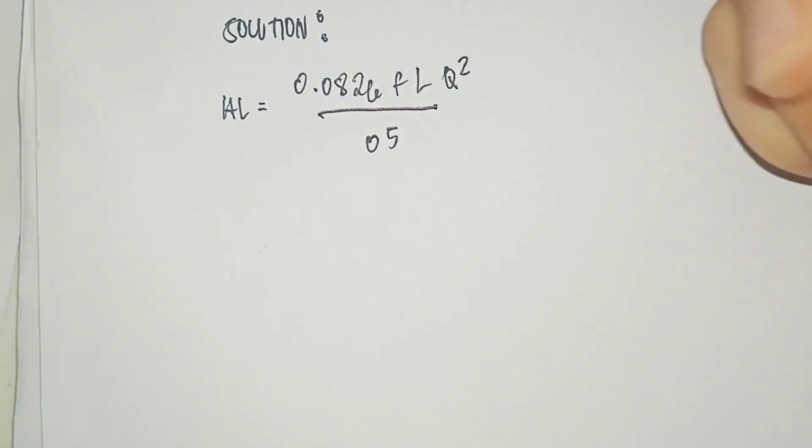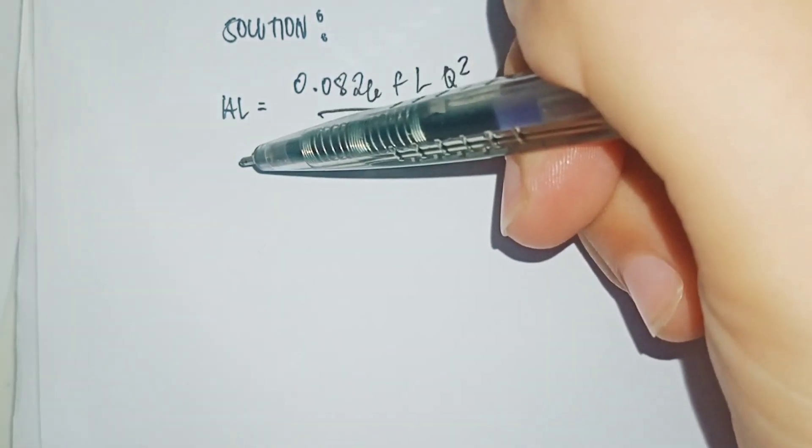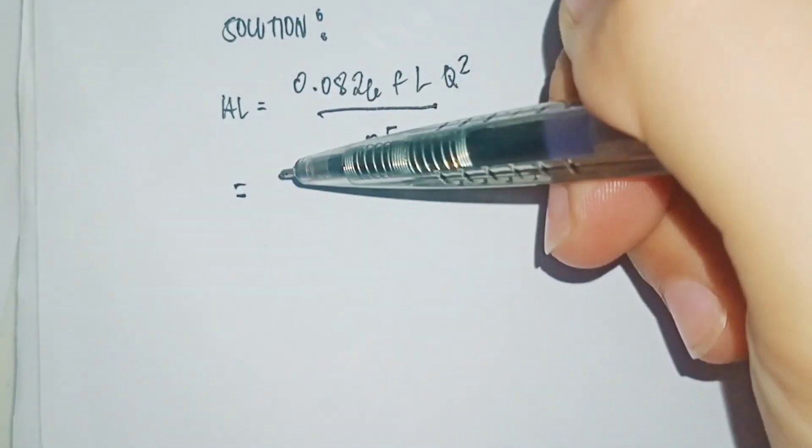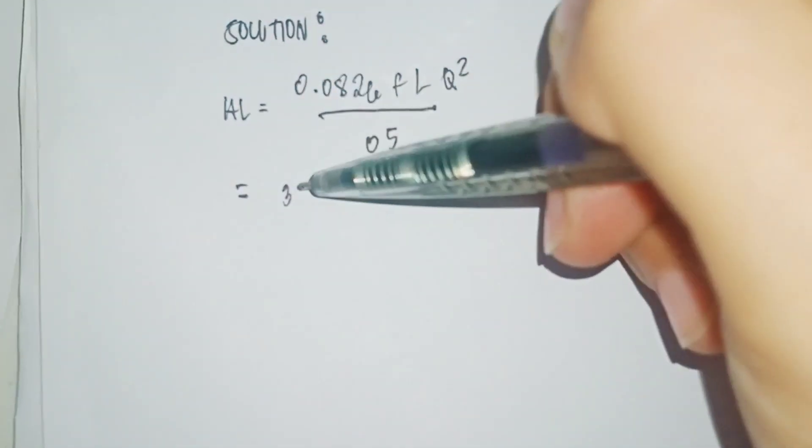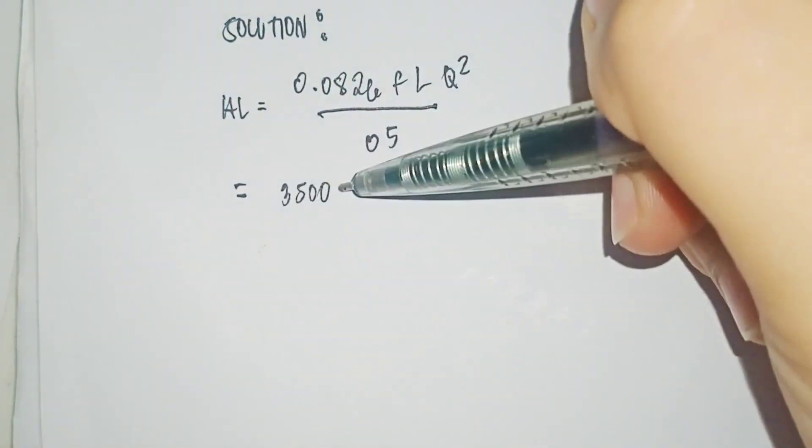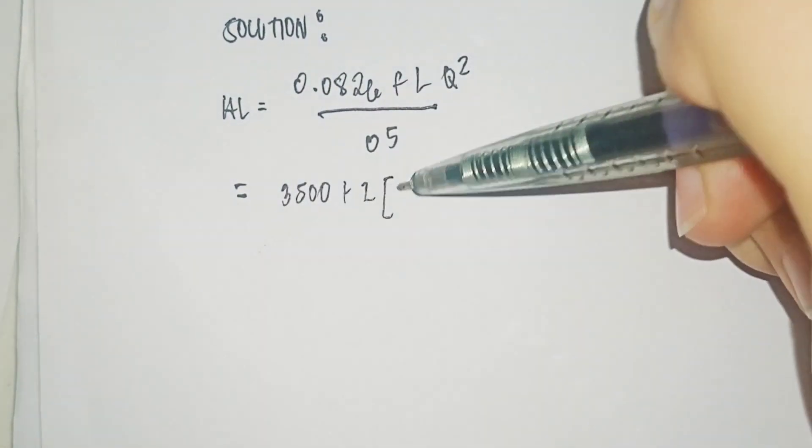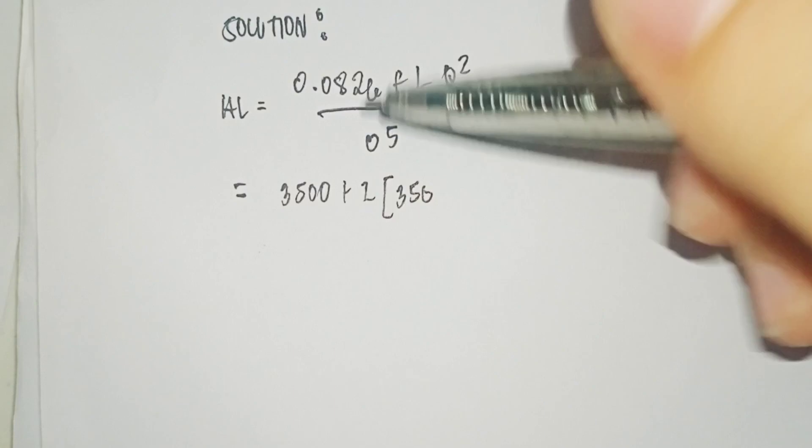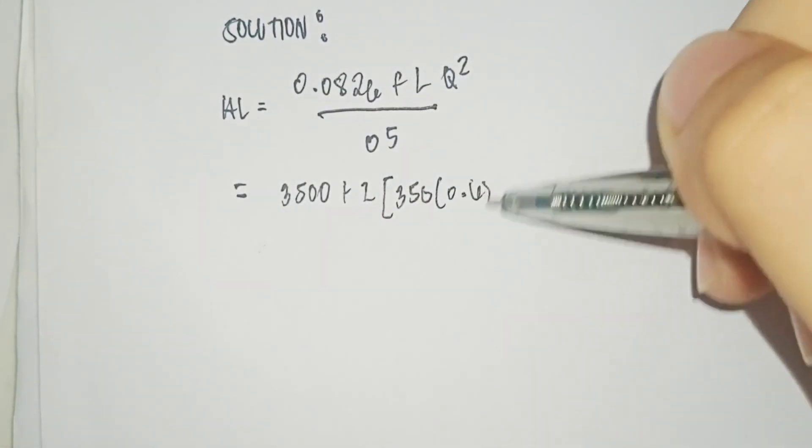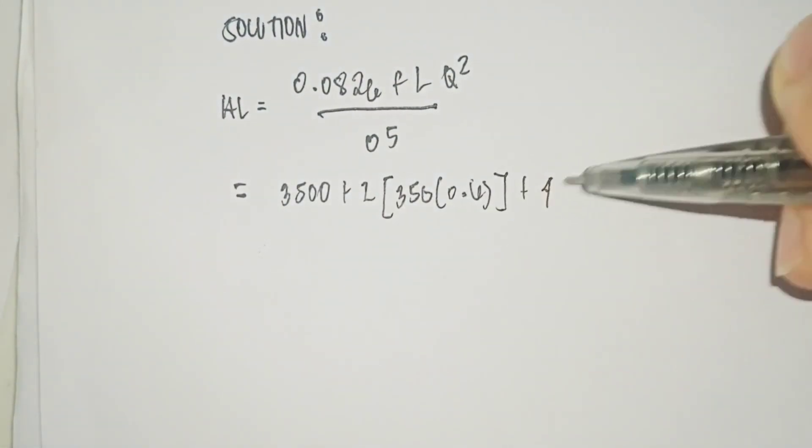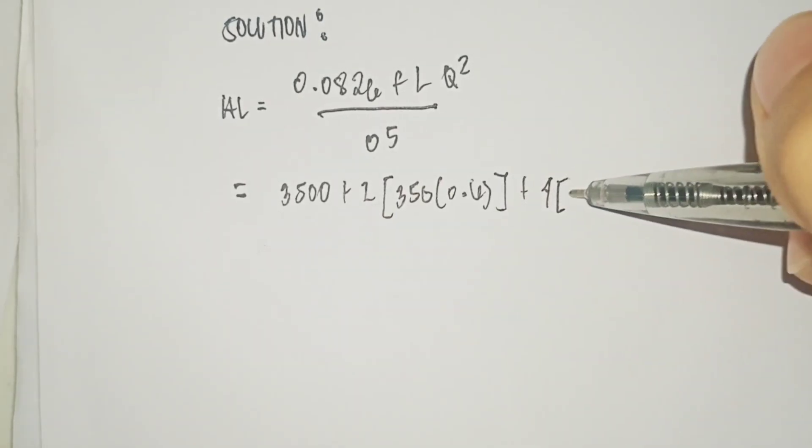So L equals 3500 plus 2 times 350 times 0.6 plus 4 times 32 times 0.6.